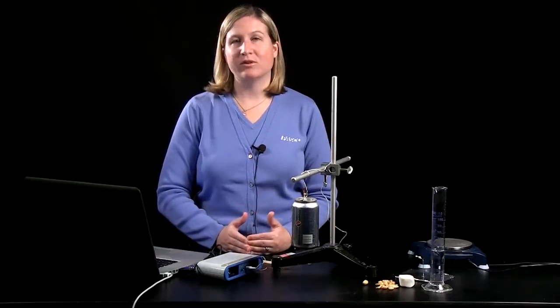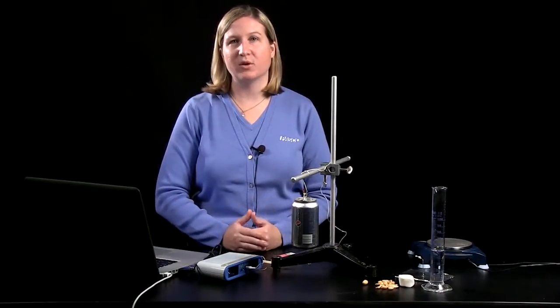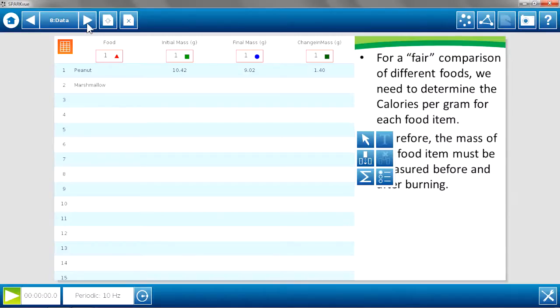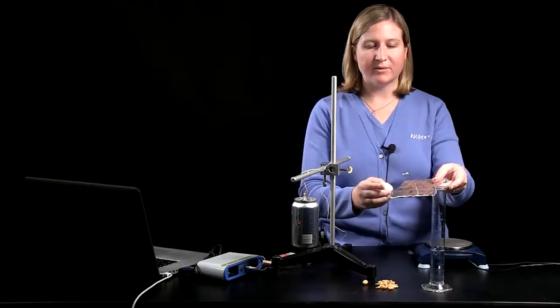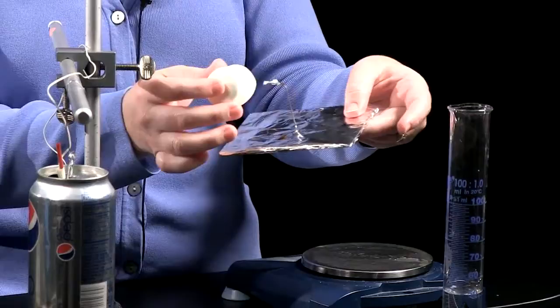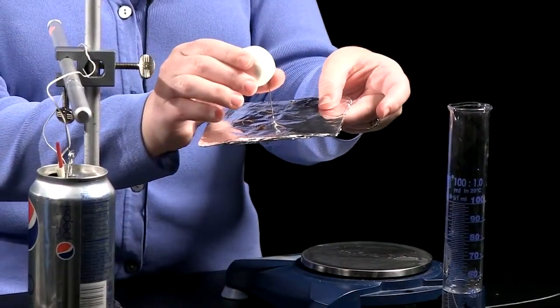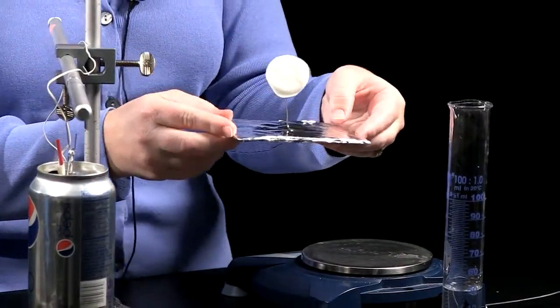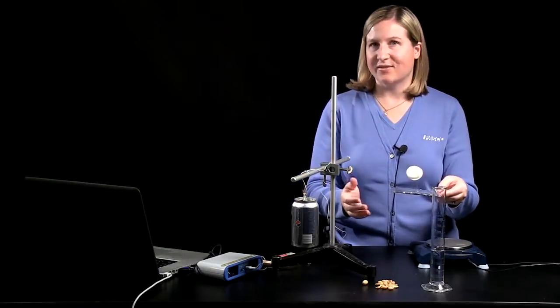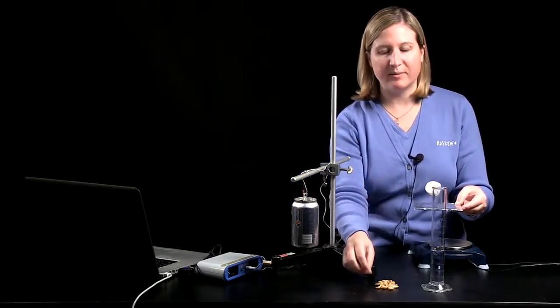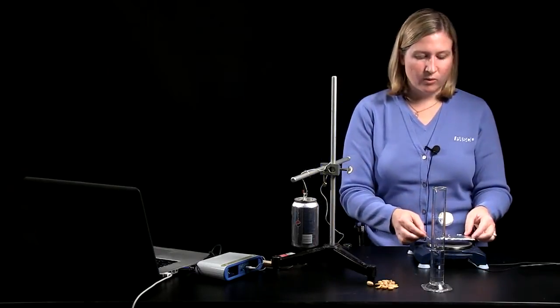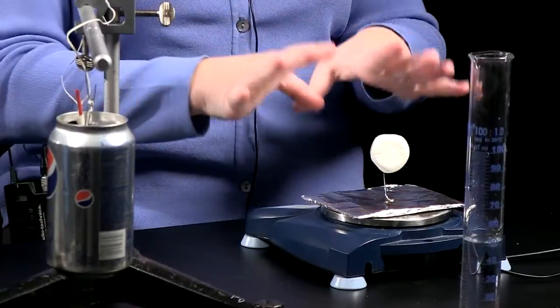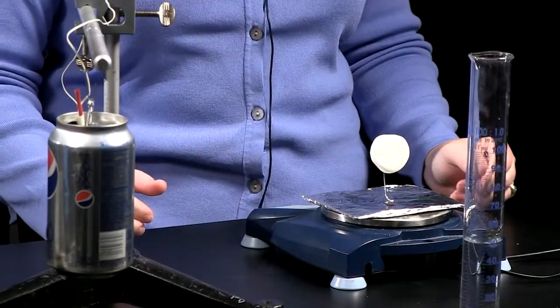So this lab will involve measuring a temperature change, but also a mass change. So it's important to get the initial mass of the food before burning it. I'm using a simple food holder made from a piece of cardboard wrapped in foil, a paper clip to be the holder. I'm going to put the marshmallow onto my food holder. For sake of the video and saving us a little bit of time, I went ahead and collected data on the peanut earlier so that we can do the comparison.